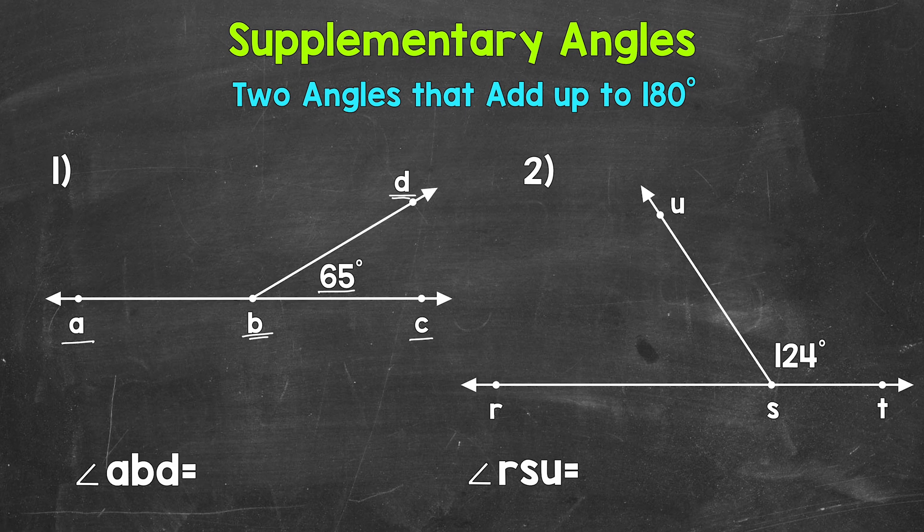we can take the sum of these two angles, which we know is going to be 180 degrees. So we will write 180 degrees, and we'll subtract the angle measure that we are given, 65 degrees. That's going to give us our missing angle.